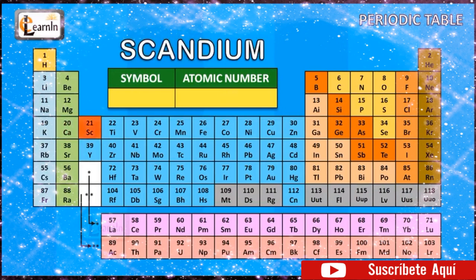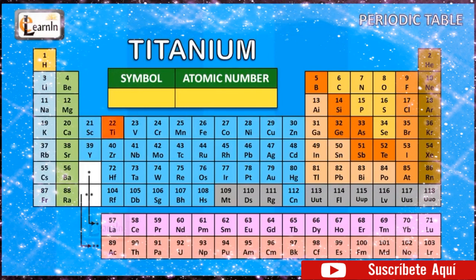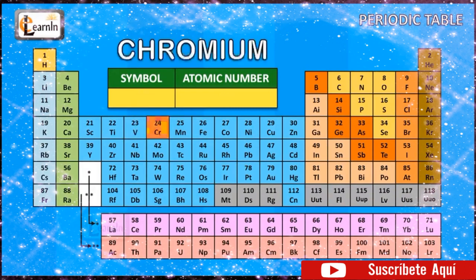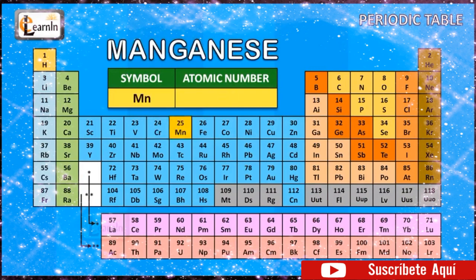The element scandium is represented as Sc and has an atomic number of 21. The element titanium is represented as Ti and has an atomic number of 22. The element vanadium is represented as V and has an atomic number of 23. The element chromium is represented as Cr and has an atomic number of 24. The element manganese is represented as Mn and has an atomic number of 25.